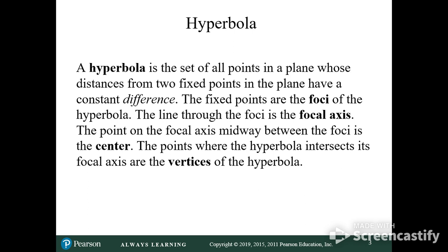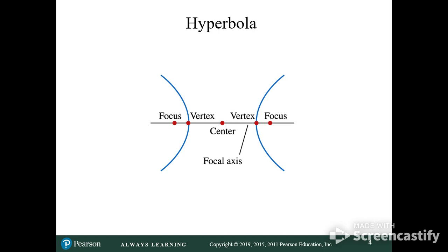The fixed points are the foci. The line through the foci is a focal axis, that's the major axis goes through the foci. The point that is midway between the two foci is the center. The points where the hyperbola intersects its focal axis are the vertices, which I kind of went through on the board a few seconds ago.